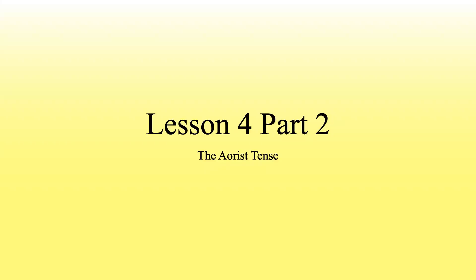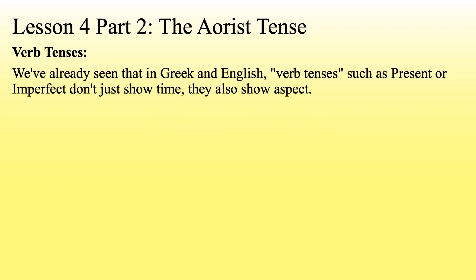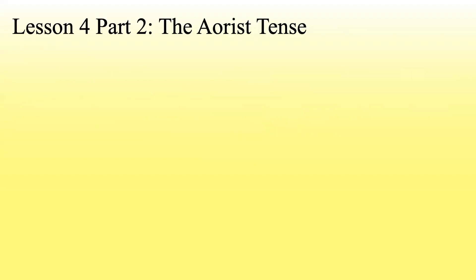Lesson four, part two: the aorist tense. I'm going to go back and take another look at the overview of our verb tenses and how verb tenses work so that we can figure out how the aorist tense fits into everything. We've already seen that in Greek and English, verb tenses such as present or imperfect don't just show time — they also show aspect. A verb's tense represents the time when an action happens; a verb's aspect represents the kind of action that happens.